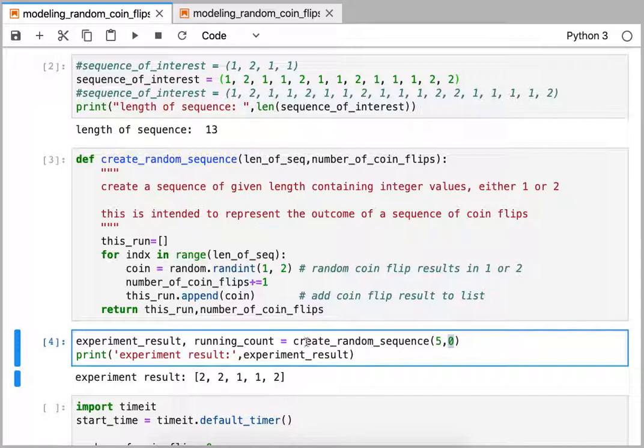When we provide that to the function, the outcome is that we get a list back of 2, 2, 1, 1, 2. So this could be heads, heads, tails, tails, heads. That would be our randomly generated sequence from the function.